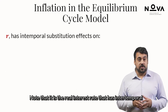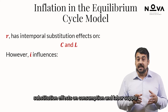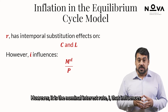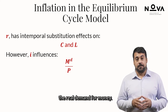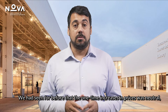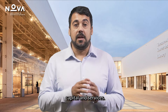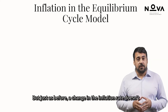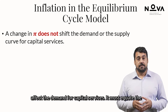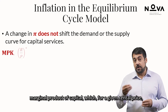Note that it is the real interest rate that has intertemporal substitution effects on consumption and labour supply. However, it is the nominal interest rate, I, that influences the real demand for money. We had seen before that the one-time increase in prices was neutral, that is, it did not change either the demand or supply of capital and services. Similarly, a change in the inflation rate doesn't affect the demand for capital services — it must equate the marginal product of capital, which, for a given rental price, does not change.